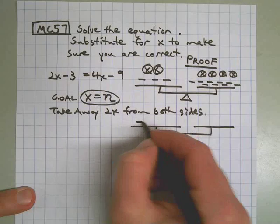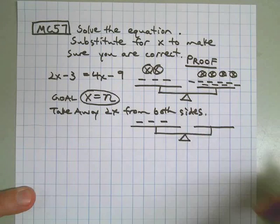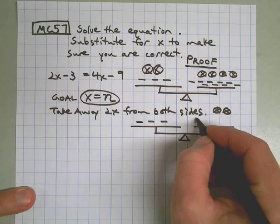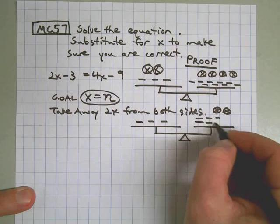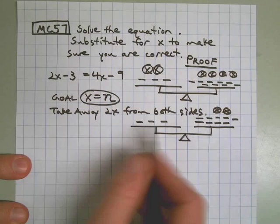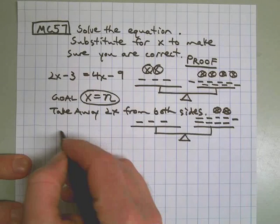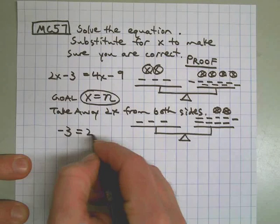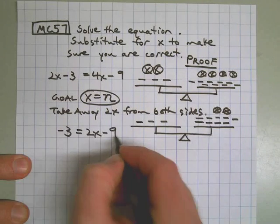I still have 3 negatives over here. I only have 2x's left on this side, and I still have my 9 negatives left on that side. So to rewrite this picture that I've drawn, I now have negative 3 on one side, and I have 2x and 9 negatives on the other side.